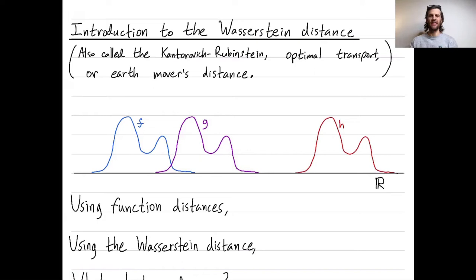Hello, everybody. I wanted to give an introduction to the Wasserstein distance. The Wasserstein distance is used in applied topology for a variety of things — distances between persistence diagrams or to define metric simplicial thickenings. But today I just wanted to give an overview of the Wasserstein distance completely separate from its uses in applied topology. There are many names for the Wasserstein distance: it's also called the Kantorovich-Rubinstein, or the optimal transport, or the earthmover's distance.